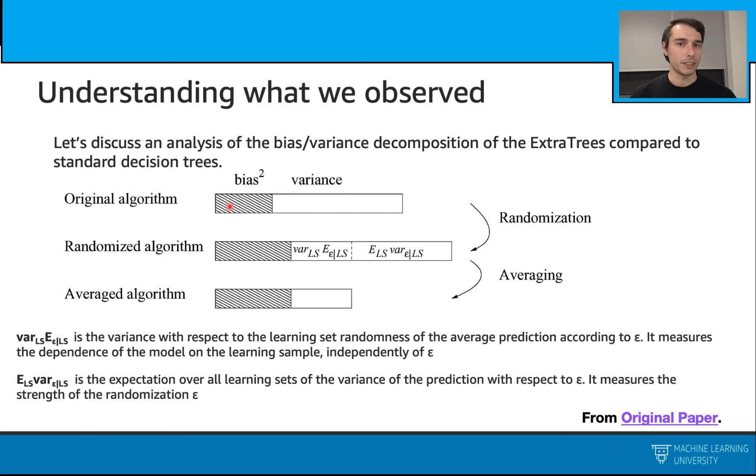The step of randomization: this time we turn this into a single ExtraTree. Here, the variance and the bias changes. As you see, the bias increased, and the total variance also increased. We had this variance due to this fluctuation decrease, but we have this added variance due to the added randomness.